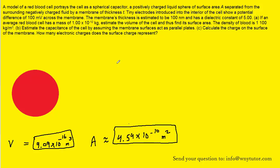For part B, we are asked to calculate or estimate the capacitance of the cell by assuming that the membrane surface acts as parallel plates. And so we know that when we have a capacitor made up of parallel plates that is filled with a non-conducting material, which is called a dielectric, we can determine its capacitance by the following equation.